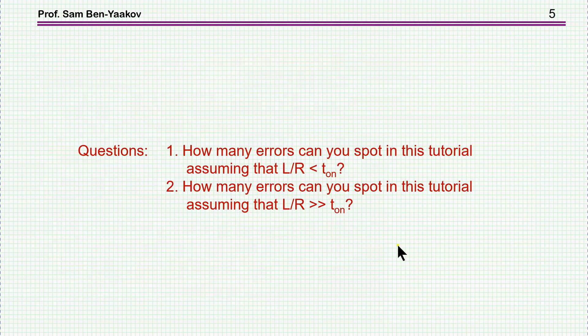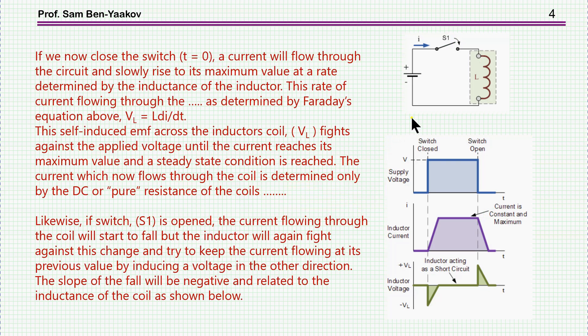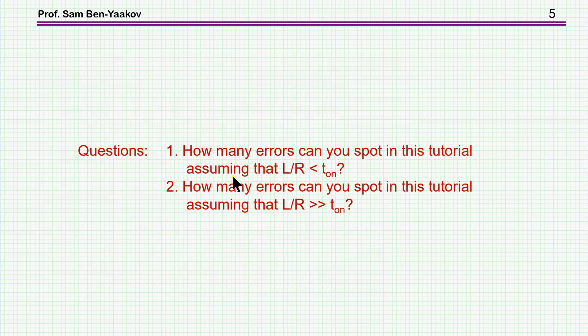So the questions are: how many errors can you spot in this tutorial assuming that the time constant L over R is smaller than t on? And then how many errors can you spot in this tutorial assuming that L over R is much larger than t on? I'll give my answers in a forthcoming video.